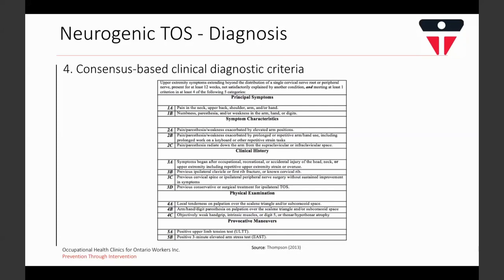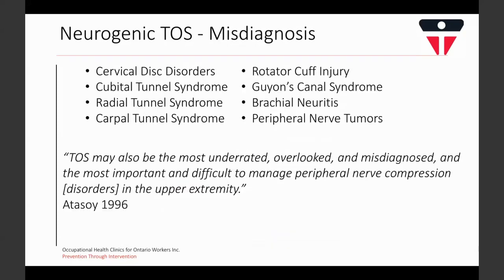The CORE-TOS panel evaluated and ranked over 200 clinical features considered important for diagnosing neurogenic TOS, resulting in a list of diagnostic criteria. One reason having diagnostic criteria is so important is that many other disorders present with similar symptoms, including other peripheral neuropathies such as carpal tunnel syndrome and rotator cuff tears. As hand surgeon Ertisan Adasoy noted, TOS may be the most underrated, overlooked, and misdiagnosed, and the most important and difficult to manage peripheral nerve compression disorder in the upper extremity.